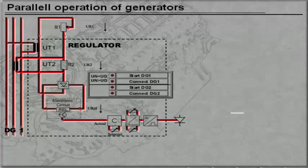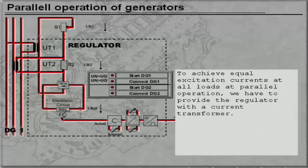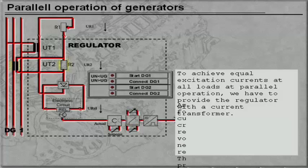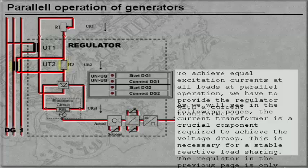To achieve equal excitation currents at all loads at parallel operation, we have to provide the regulator with a current transformer. As we will see in the following pages, the current transformer is a crucial component required to achieve the voltage droop. This is necessary for a stable reactive load sharing.